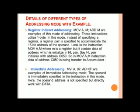Third addressing mode is register indirect addressing mode. This is very important. The example of this type is MOV A, M. Instead of specifying a single register, a register pair is specified to accommodate the 16-bit address of the operand. In the instruction MOV A, M, M is a register but it contains the data of the address which is initialized in the HL pair. Say the HL pair is initialized to address C050H.